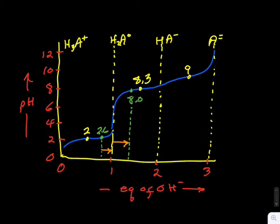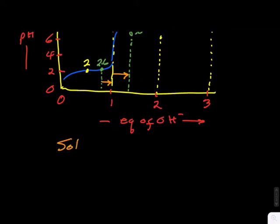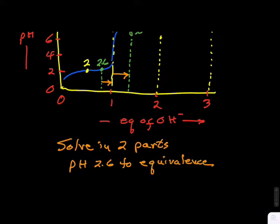The two orange arrows describe the two parts of the solution of this problem itself. We need to calculate the amount of base to be added to titrate from pH 2.6 to the equivalence point, and then from the equivalence point to pH 8.0. Let's begin.